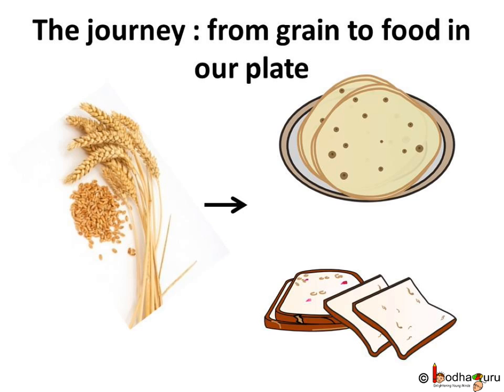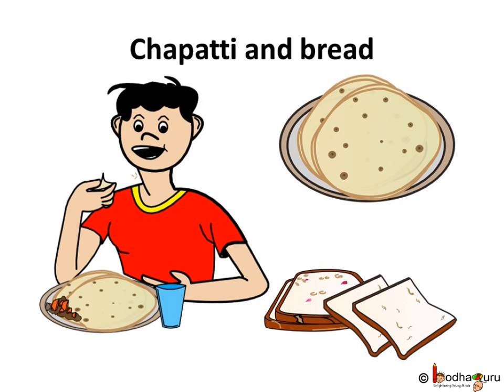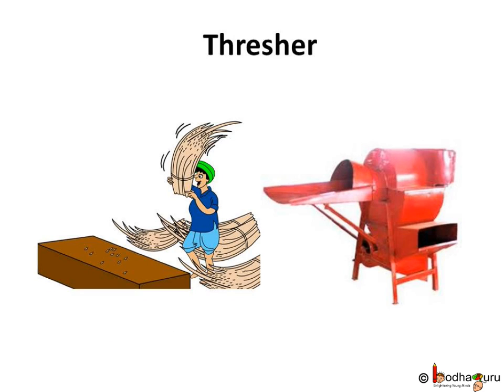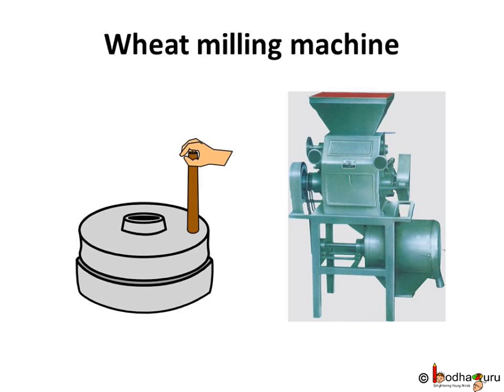Using so many separation techniques, wheat from the farm reaches our home ready to be used in various dishes. Many people follow different techniques, and nowadays machines are also used for all the separation steps. For example, a wheat thresher is used instead of manual beating, and a wheat milling machine may be used instead of manually grinding the wheat grains to get flour.